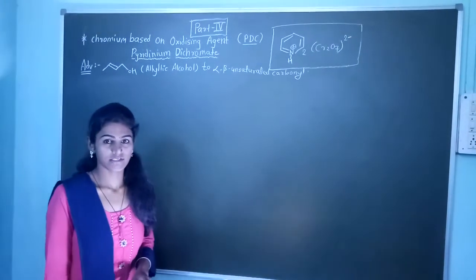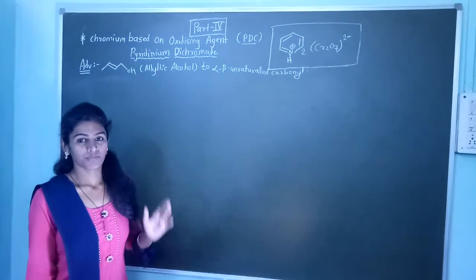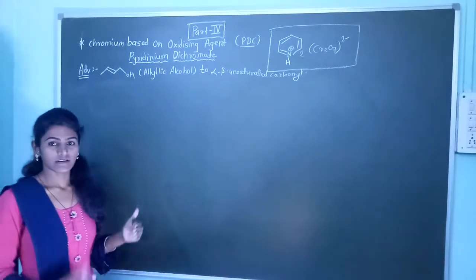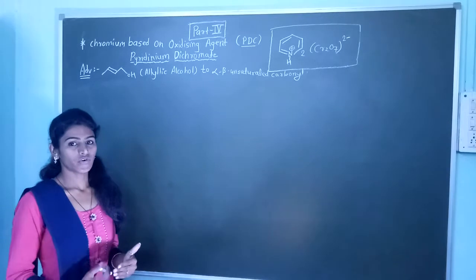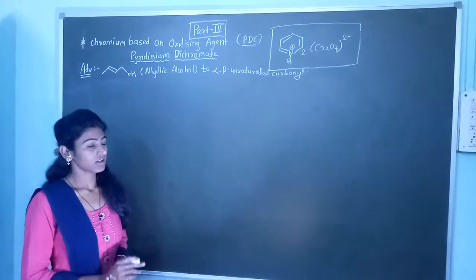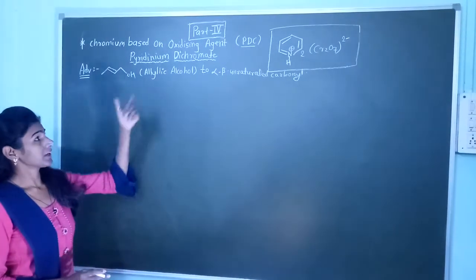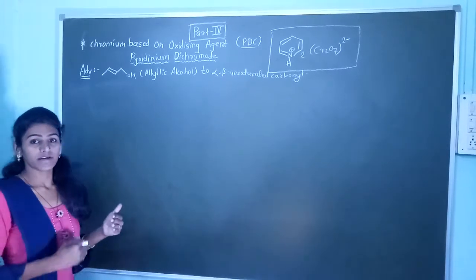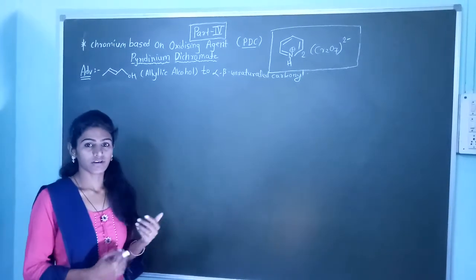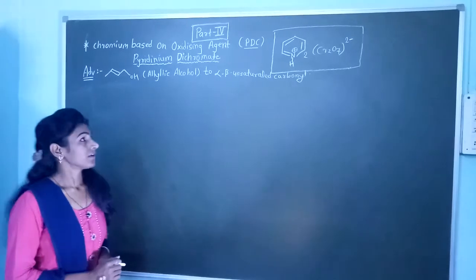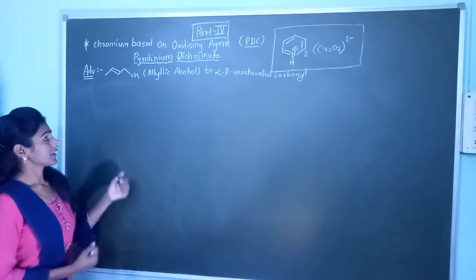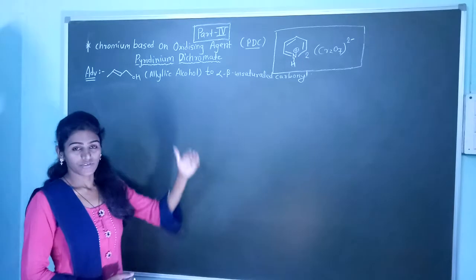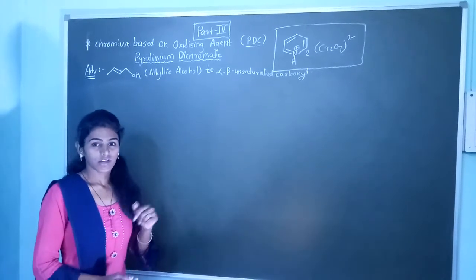The second chromium-based oxidizing agent is PDC, which means Pyridinium Dichromate. Here we are going to oxidize alcohol to the corresponding carbonyl group. PDC oxidizes primary and secondary alcohols to corresponding carbonyl groups. One advantage is that allylic alcohol is converted into alpha-beta unsaturated carbonyl compound.